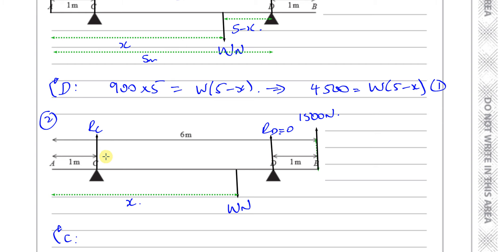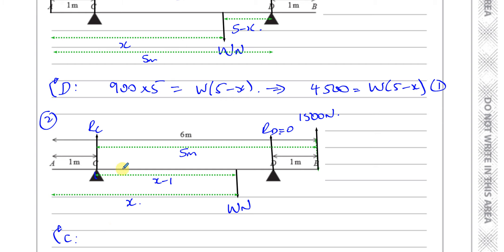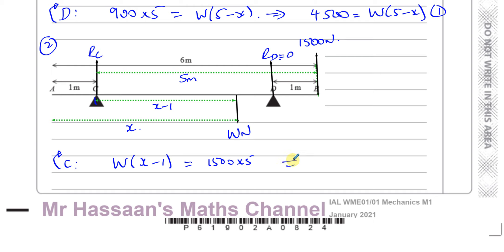That gives us equation 2: 7,500 = W(x − 1). Now I have two equations with two unknowns that I can solve simultaneously.